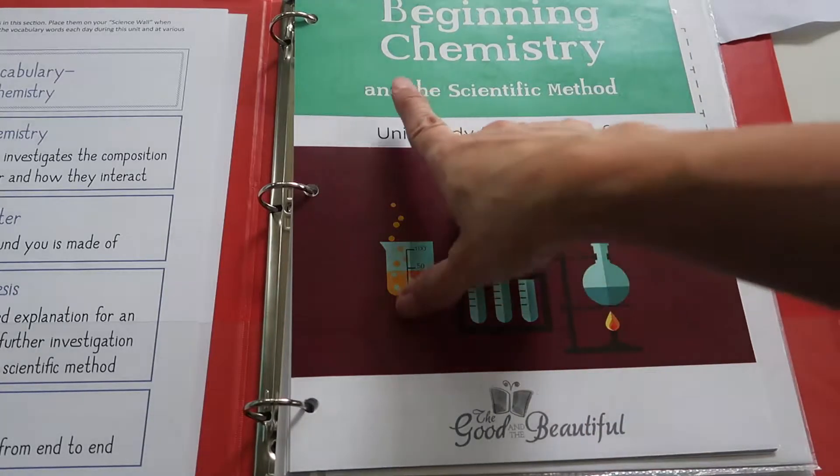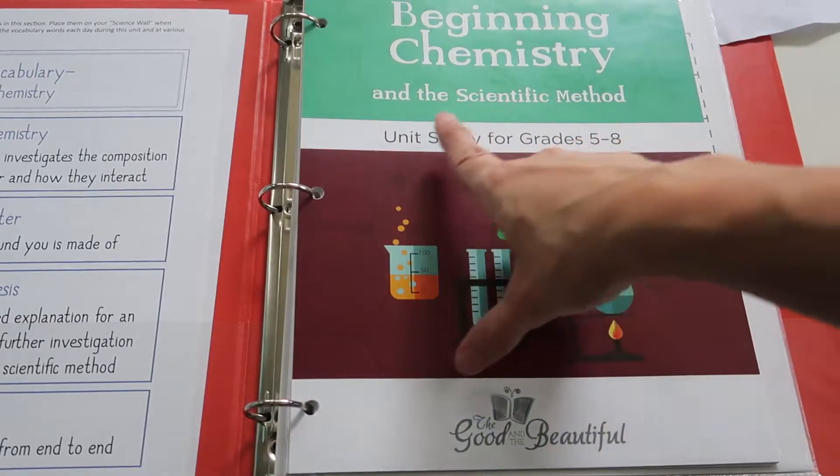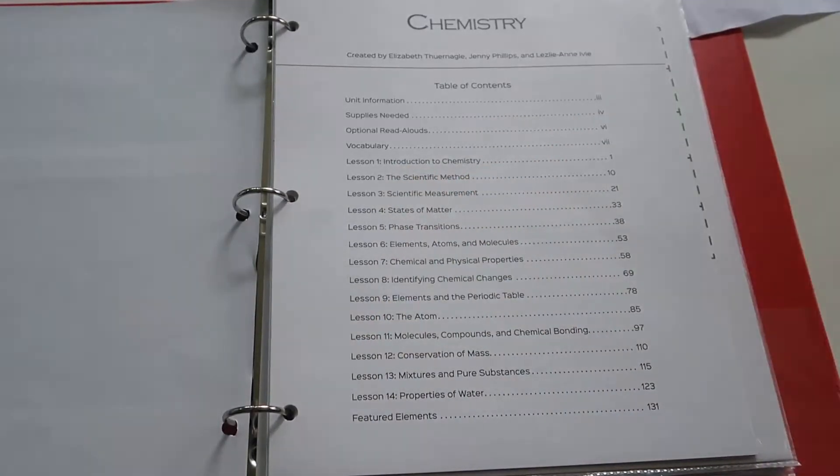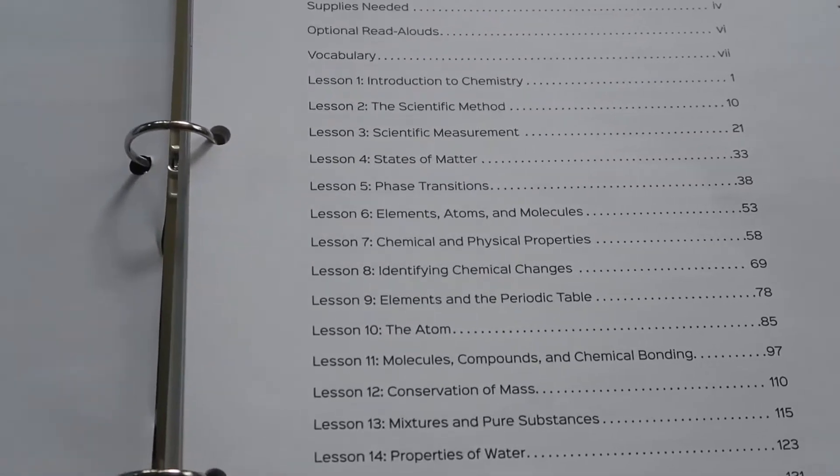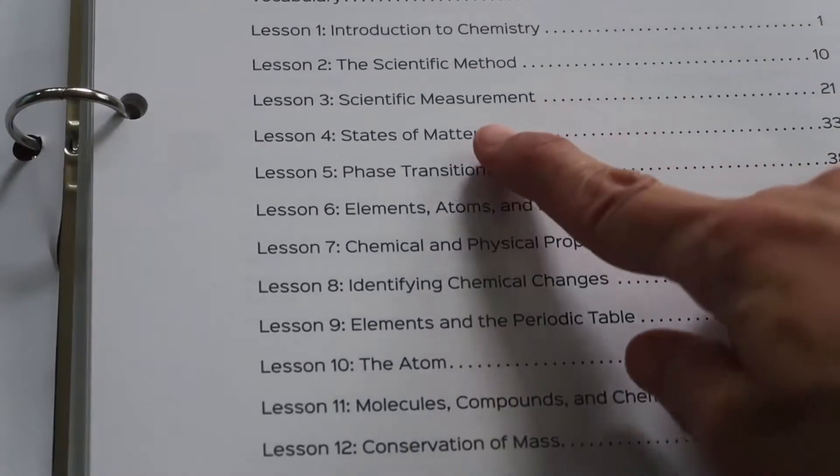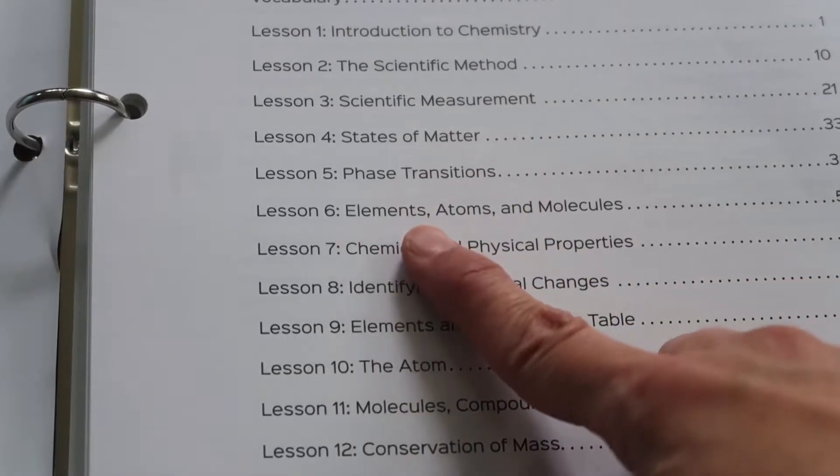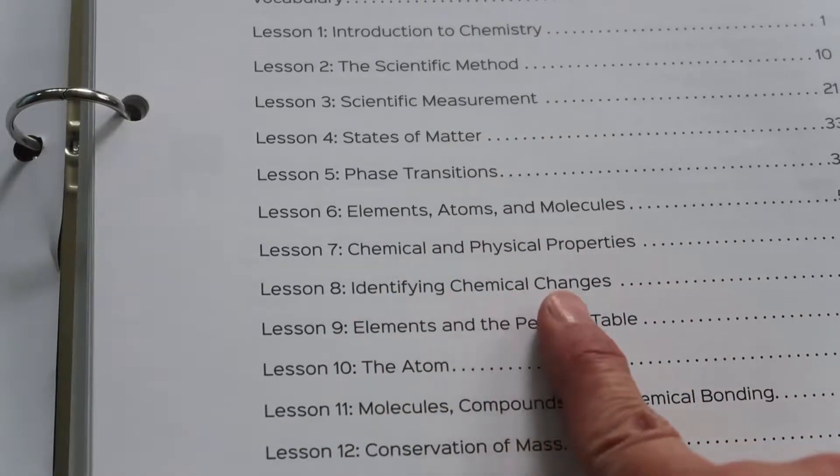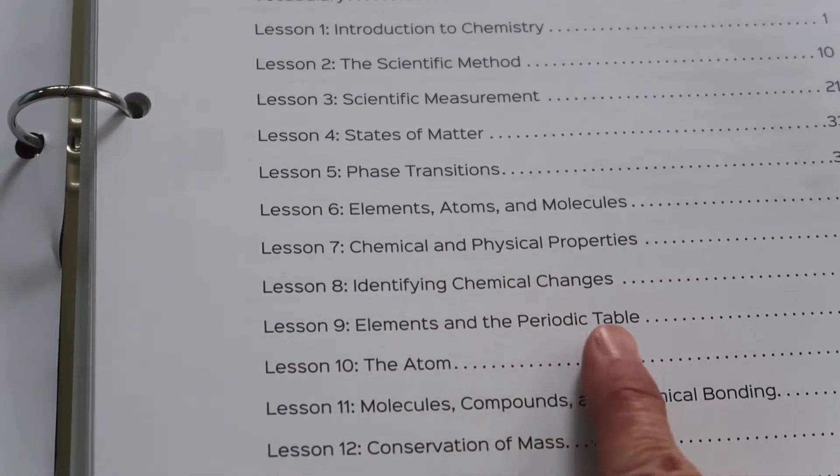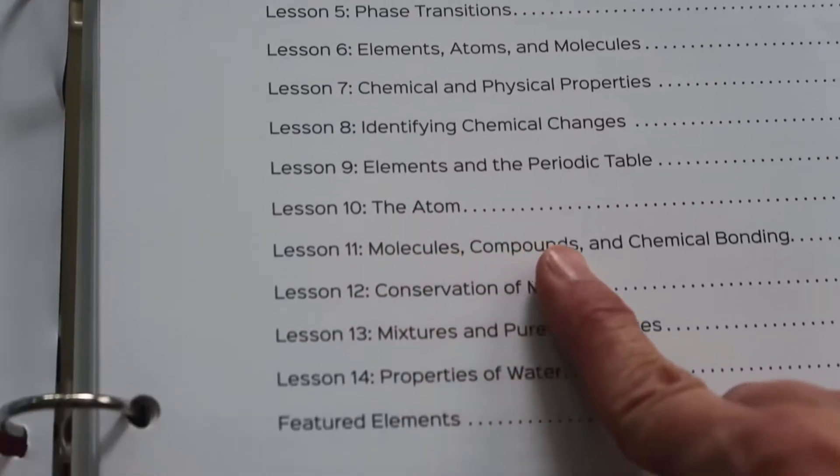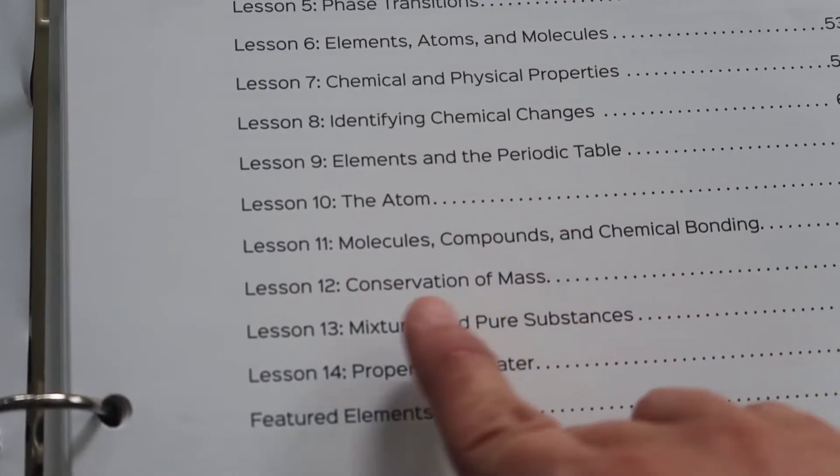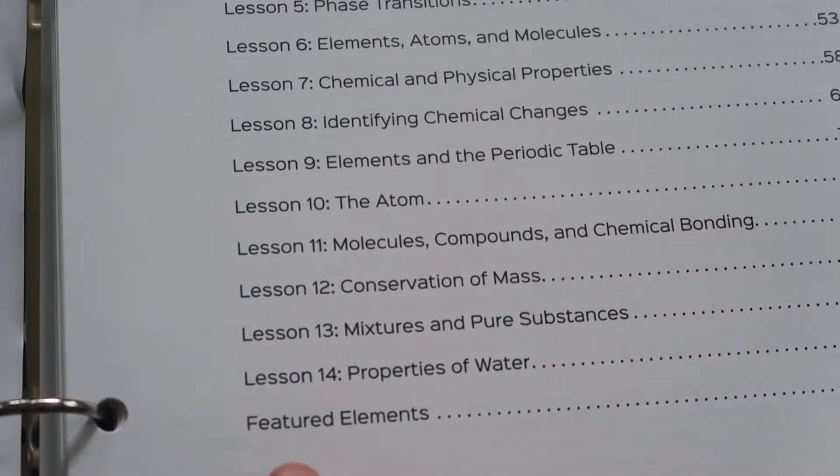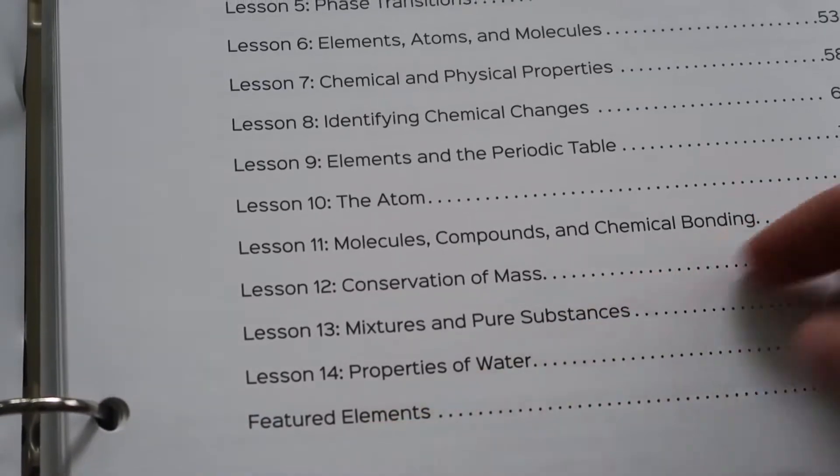So this beginning chemistry and the scientific method is a unit study for grades 5-8. It teaches an introduction to chemistry, the scientific method, scientific measurement, states of matter, phase transitions, elements, atoms, and molecules, chemical and physical properties, identifying chemical changes, elements and the periodic table, the atom, molecules, compounds and chemical bonding, conservation of mass, mixtures and pure substances, and properties of water. And there's also a section that says featured elements.